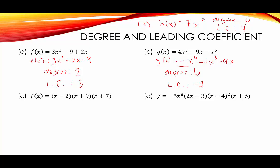On to our factored polynomials. In letter c, to find the degree we take where we see the variable and deal with any exponent separately. It's going to be x times x times x that will have the largest exponent if we were to expand this — which we don't need to do to determine the degree and leading coefficient. If we multiply those, we get x³, which indicates the degree is 3. And the leading coefficient: since there's nothing being multiplied to x³, we always have that invisible factor of 1, so the leading coefficient is 1.